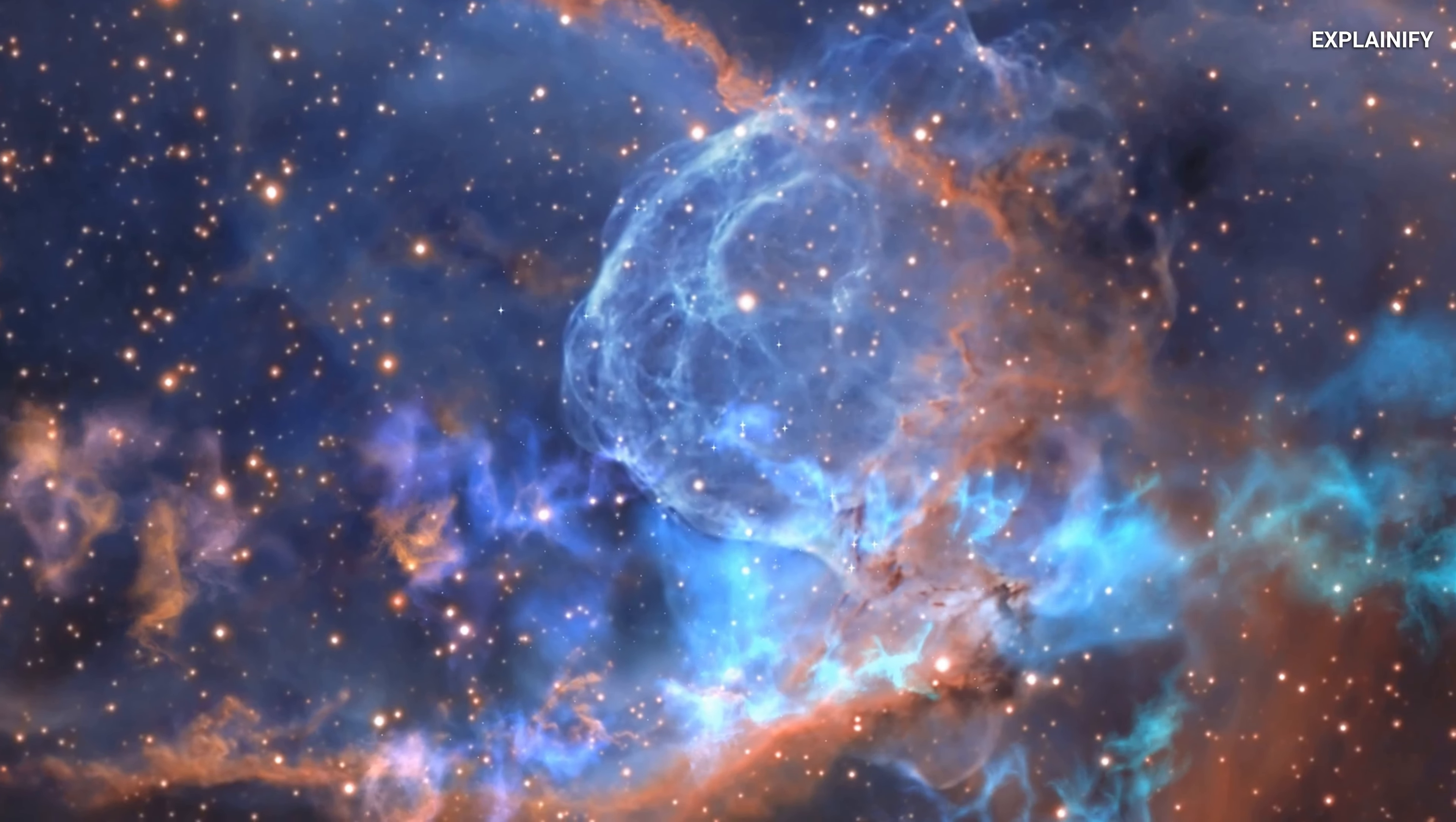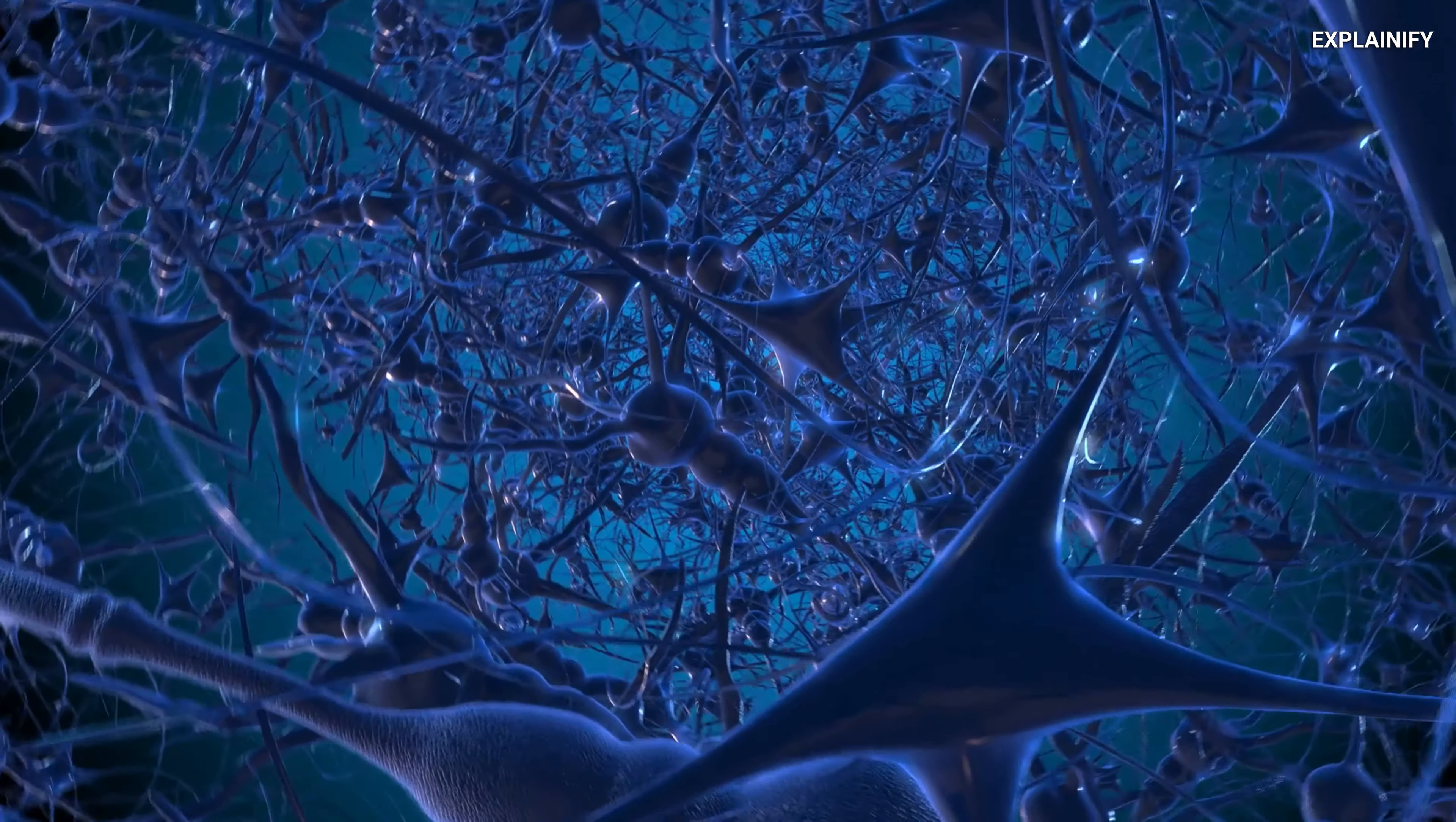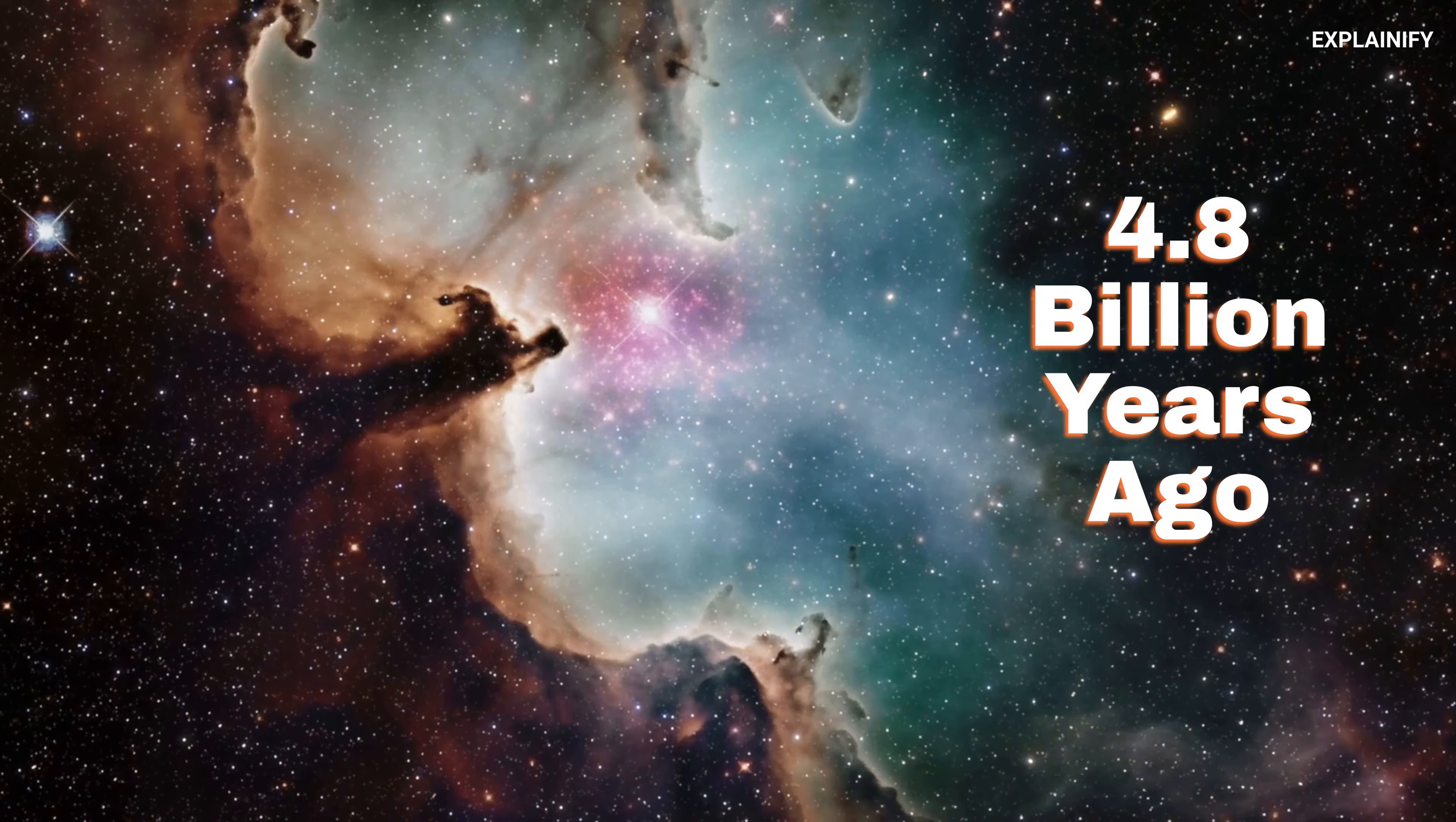We know this is the way things are. If you leave things, they get more disordered. How is it that these ordered structures form? The human brain being the most ordered structure we know of in the universe. How did that form spontaneously from a collapsing cloud of dust 4.8 billion years ago or so?